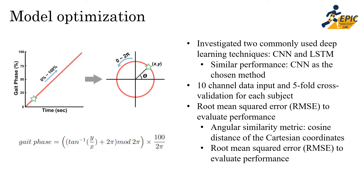A key aspect during model training was re-representing the gait phase into Cartesian coordinates. Since gait phase has a discontinuity from 0% to 100% — both referencing the same gait event — we reconstructed the data into x-y coordinates to ensure continuity in the system. We explored two deep learning techniques, CNN and LSTM, but after model optimization both showed similar performance, so we chose CNN as it trains faster. We used 10 channels of data — bilateral hip joint encoders and IMU — with five-fold cross-validation per subject, and evaluated using RMSE computed as the cosine distance between ground truth and estimated gait phase in Cartesian coordinates.